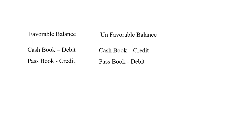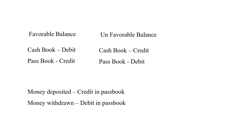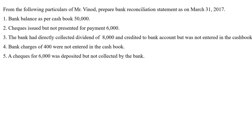You all know that when working out the cash book, whenever money comes into the business, we will debit it — we will debit all receipts and credit all payments. And when you work in the pass book, whenever money is deposited, there will be a credit entry in the pass book. If you are withdrawing money, then your pass book will be debited. These are the basic things you should know. Now let us see how to work out problems under bank reconciliation statement.